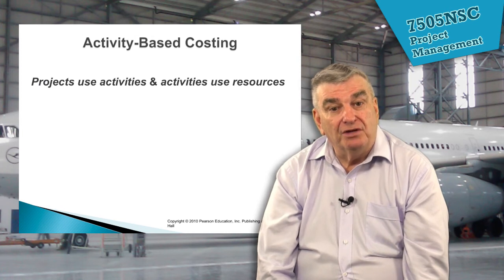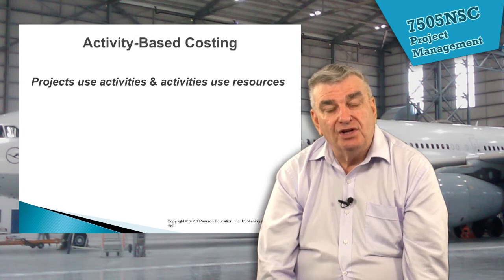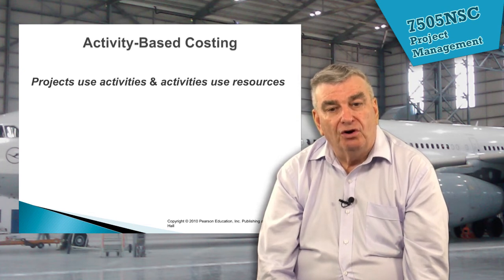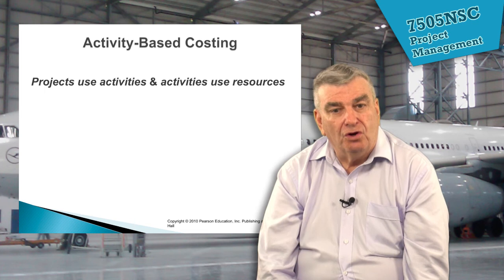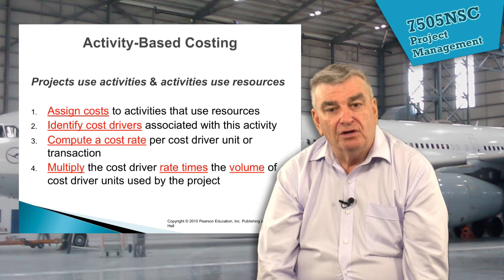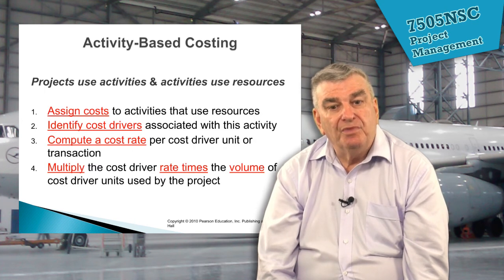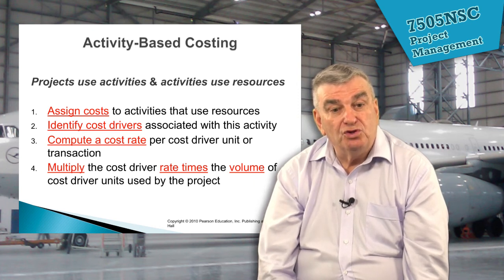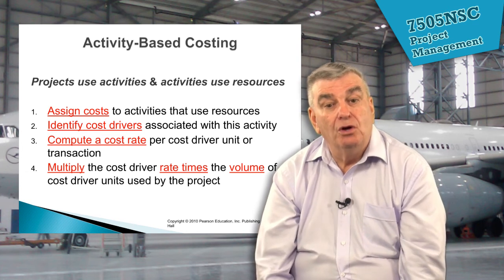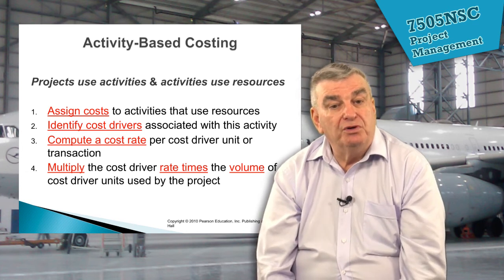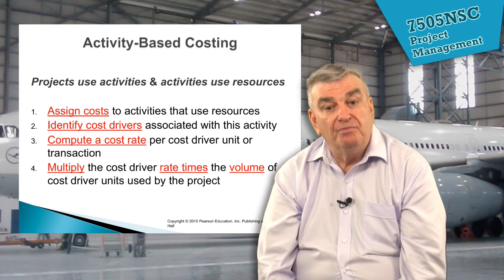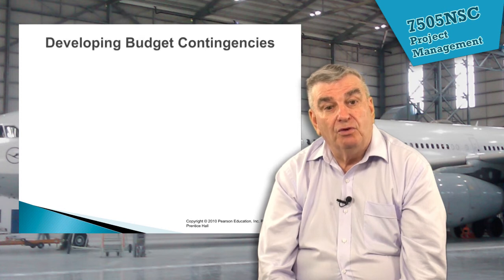Activity-based costing is where we sit down and say: if we know what the cost drivers are and what those cost drivers cost, and we've got a good idea of the time, we can get a much more accurate figure by asking: what are the resources, what do they cost, what are the cost drivers? It could be the cost per hour or the hiring cost per day of a particular piece of equipment. We can then use a multiplication factor to find out what that cost is.